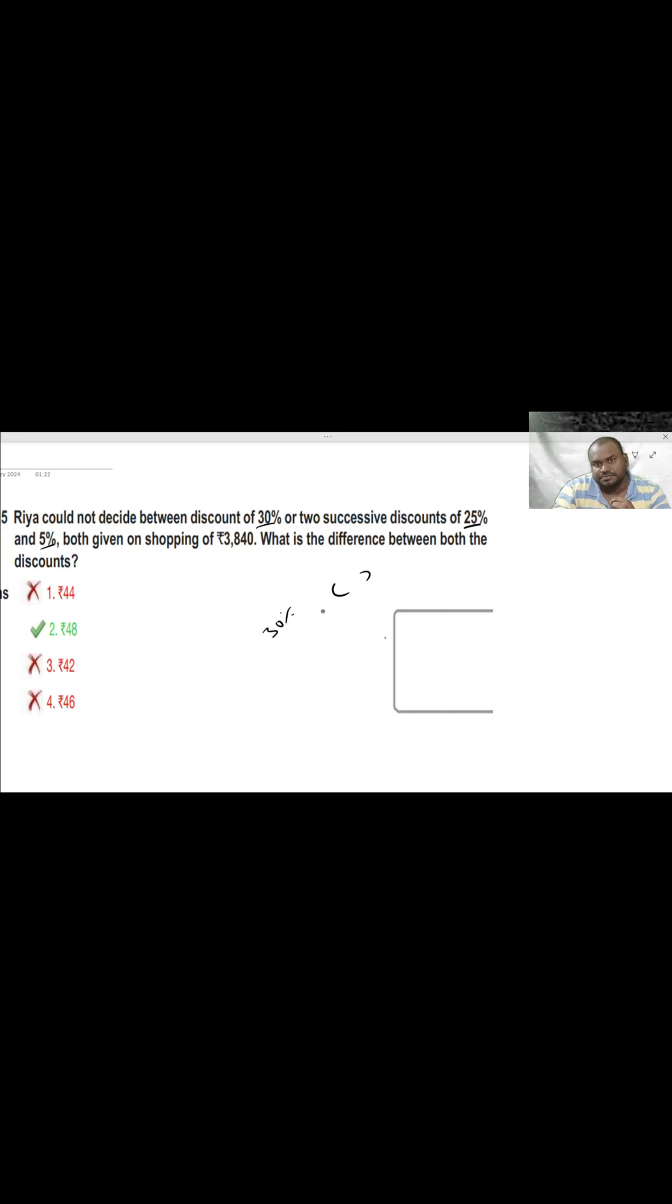30 percent is another value. So in these two discounts she is not able to decide whether to choose 30 percent or else successive discounts of 25 and 5 combination, because she doesn't know how to calculate the successive discounts of 25 and 5.